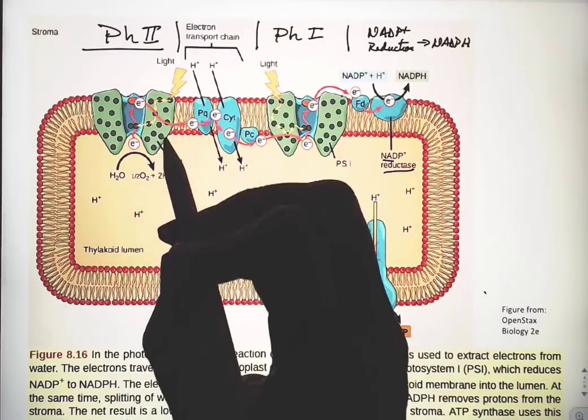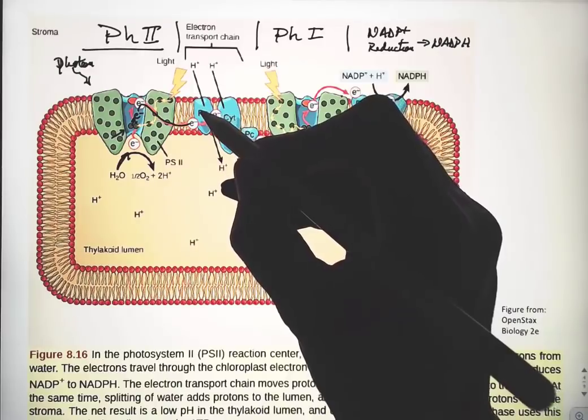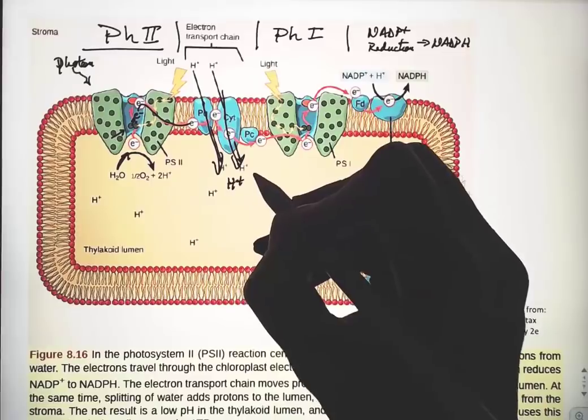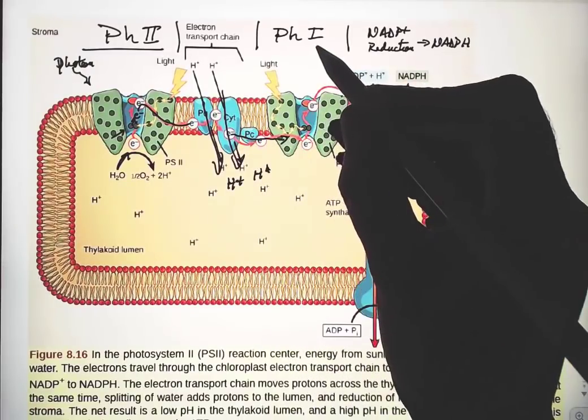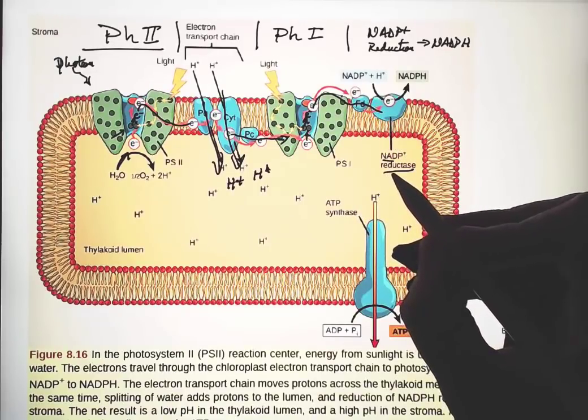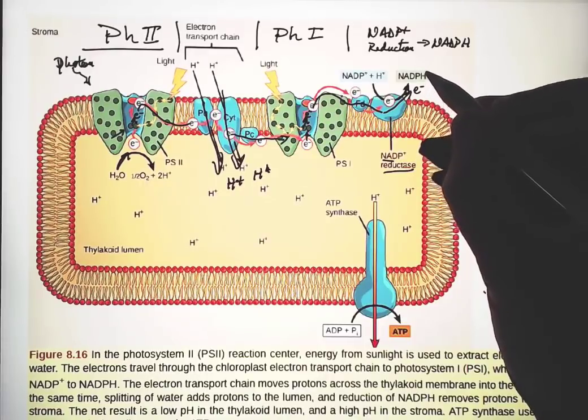We're going to be interested in photosystem 2, where everything starts in the electron transport chain. Plastoquinone and cytochrome are proton pumps that move protons into the thylakoid lumen. That electron gets passed along to photosystem 1, then to NADP+ reductase, and that's the end of our electron.